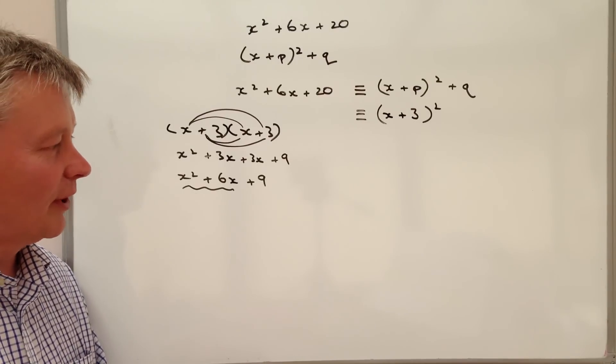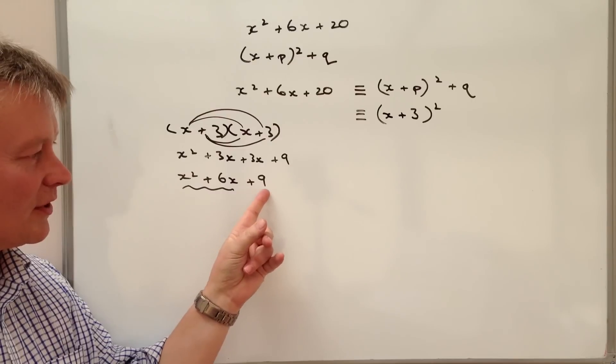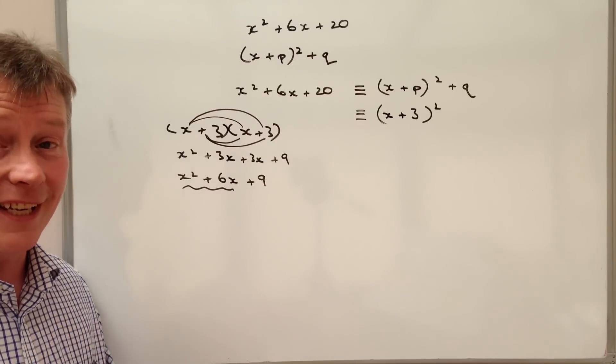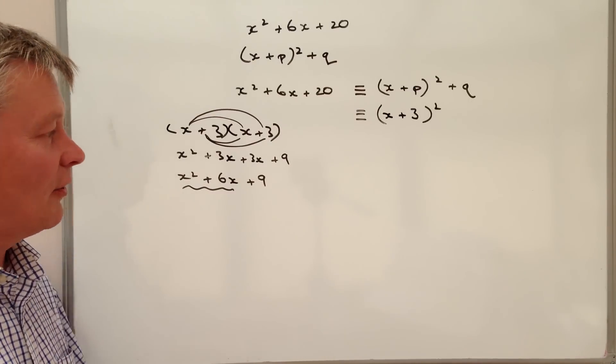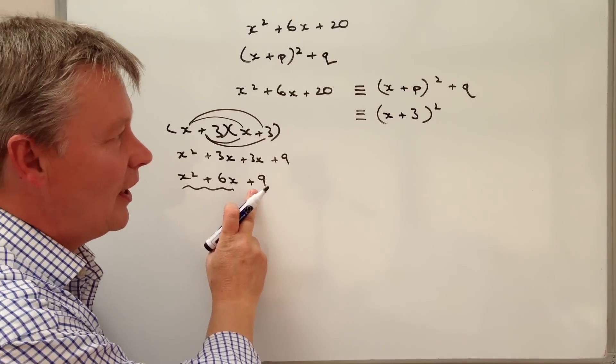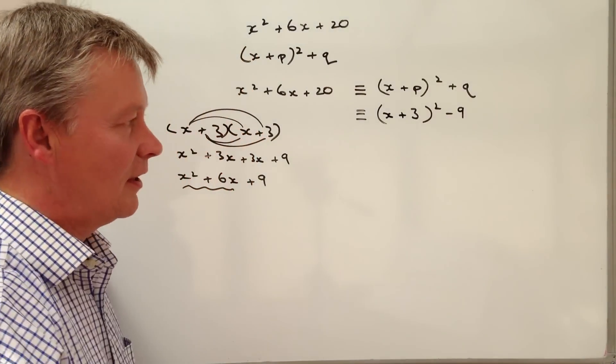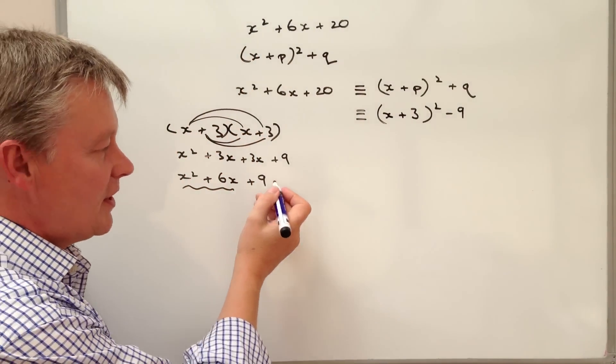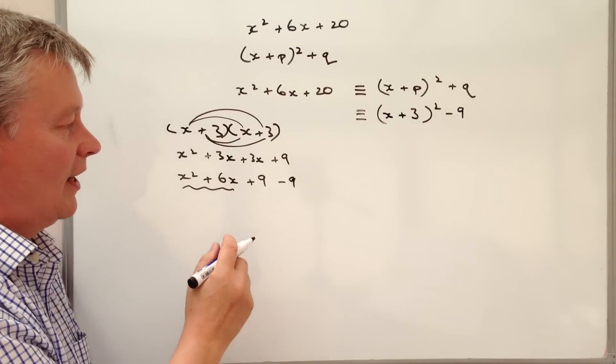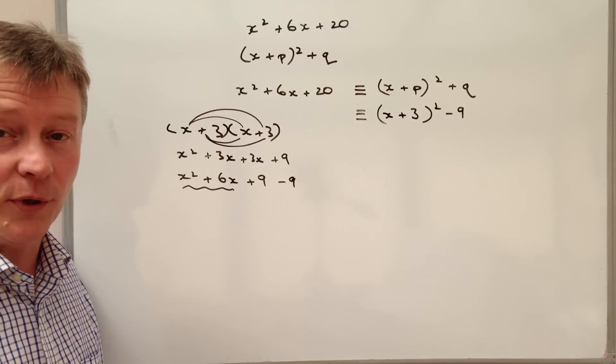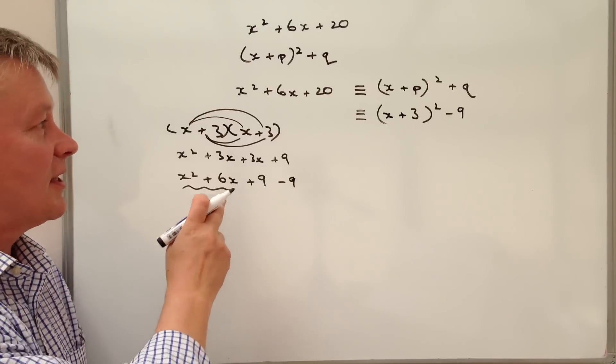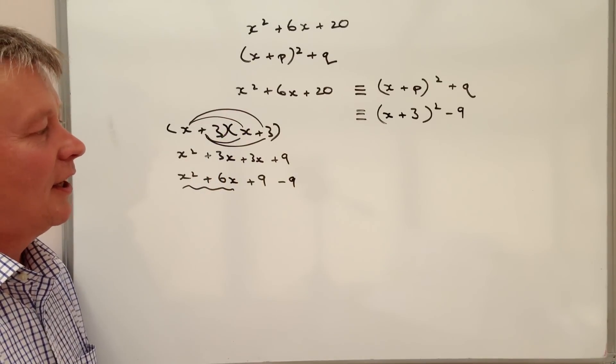So what we do when we're completing the square is we look at this positive 9 and then we take it away. So at the moment I've got positive 9 and I'm going to take that away to minus 9 and that effectively if I take 9 away from there it means I'm left with x squared plus 6x which is this bit.